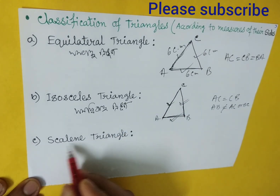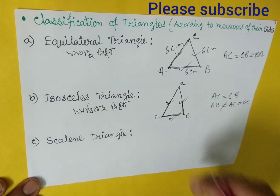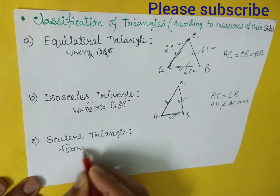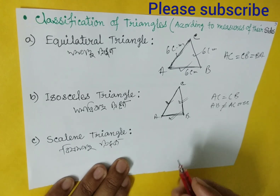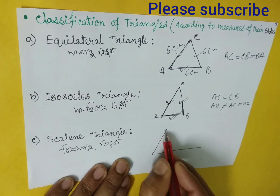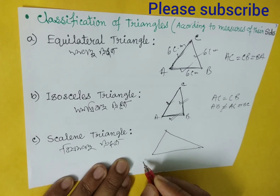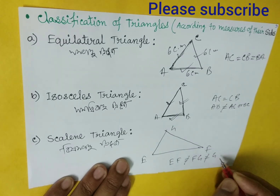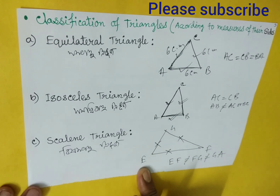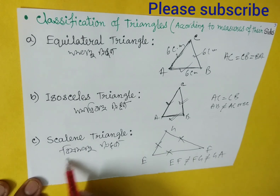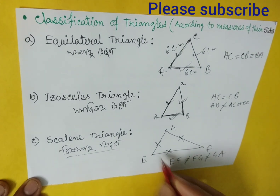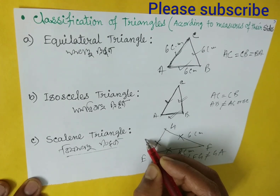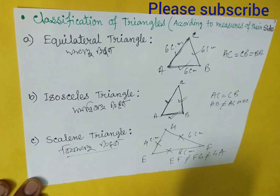Next is scalene triangle. A scalene triangle is one where all the sides of a triangle are unequal. In Bengali, that is called Bisham Bahu Tribhuj. If we draw a diagram, in figure EFG: EF is not equal to FG, and FG is not equal to GE — all three sides are unequal. For example, side EF equals 8 centimeters, side FG equals 6 centimeters, and GE equals 4 centimeters. That is called a scalene triangle.